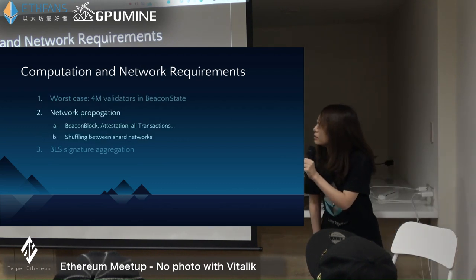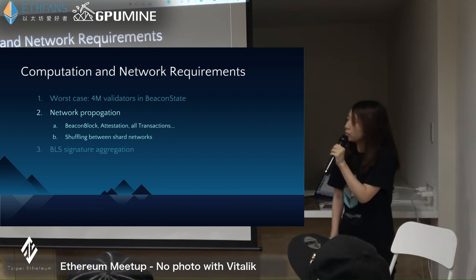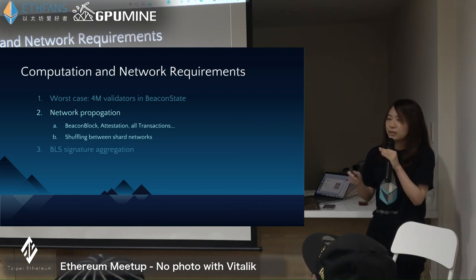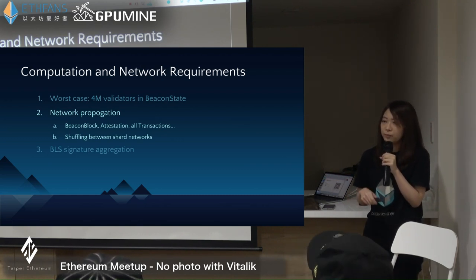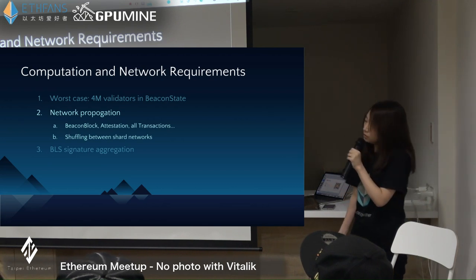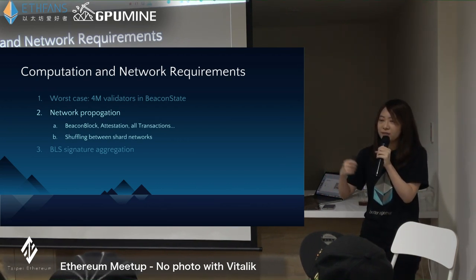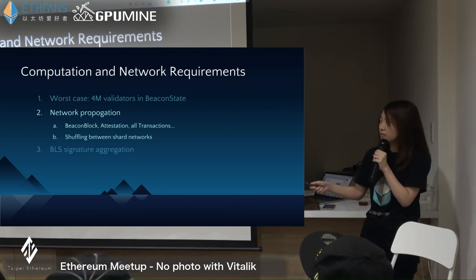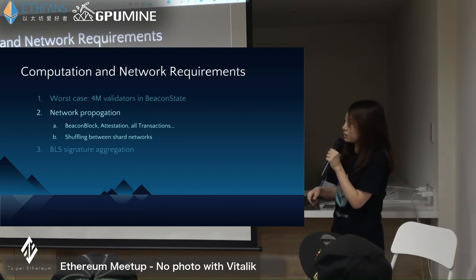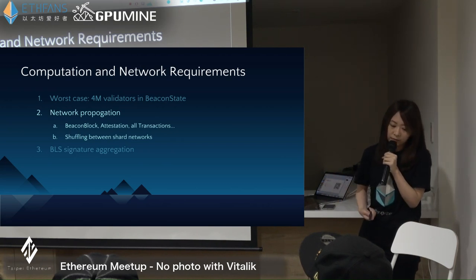The second concern is network propagation and gossip. There will be many different types of messages, but not every message needs everyone to know. Some messages only need to be known by a specific group, and some messages only need to stay at the shard chain level. This means we have to build around 1,000 subnets for each shard chain — imagine 1,024 subnets for shard chain networks. Shuffling between those networks causes a lot of overhead.